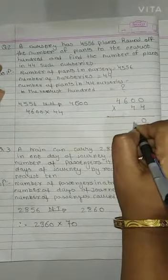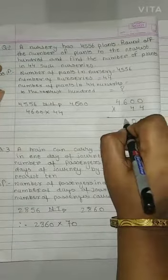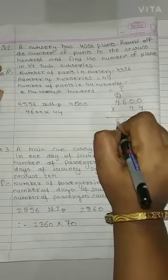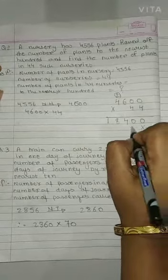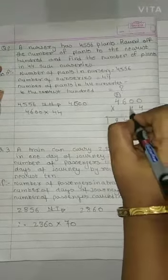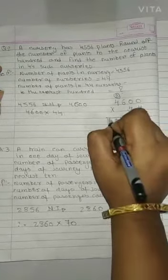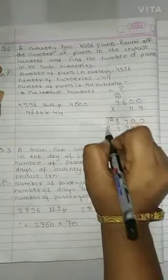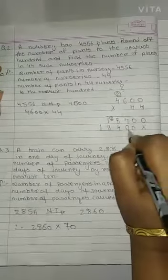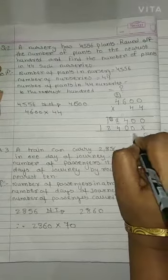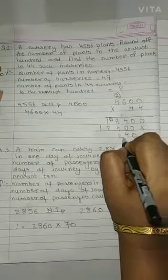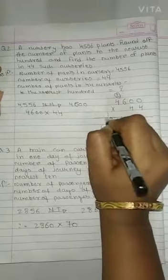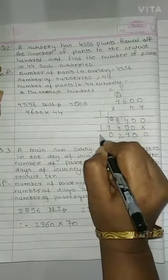4 sixes are 0, 4 sixes are 0, 4 sixes are 0, 4 sixes are 24, and 4 sixes are 16, 16 and 2 is 18. 4 sixes are 0, 4 sixes are 0, 4 sixes are 24, 4 sixes are 16, 16 and 2 is 18. 0, 0, 4 as it is, 8 and 4 is 12, 2 carry 1, 1, 8, 9, 10, 0, carry 1, 1 and 1 is 2.